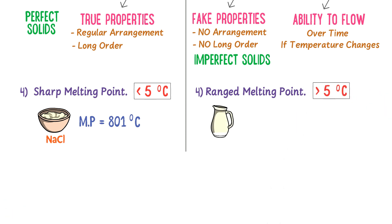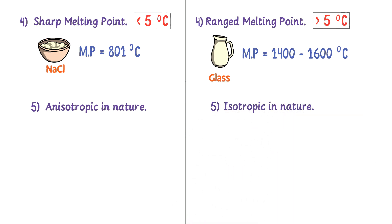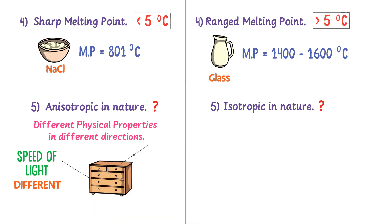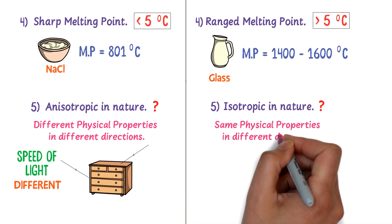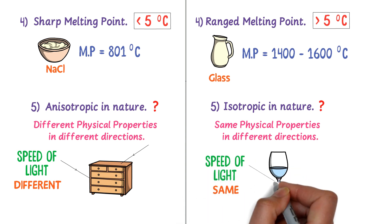For example, the melting point of glass ranges from 1400 degrees centigrade up to 1600 degrees centigrade. Fifthly, crystalline solids are anisotropic in nature, while amorphous solids are isotropic in nature. Anisotropic means that crystalline solids have different physical properties in different directions — for example, the speed of light is different through wood in different directions. Isotropic means amorphous solids have the same physical properties in all directions — for example, the speed of light is the same in all directions through glass.